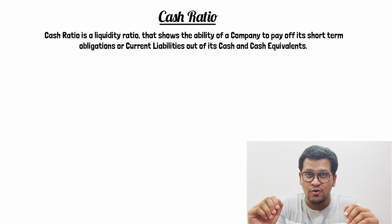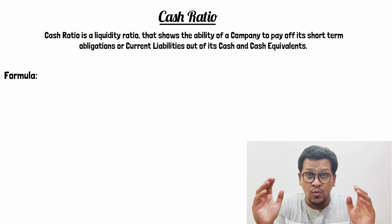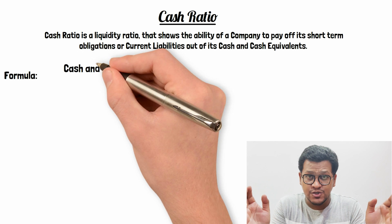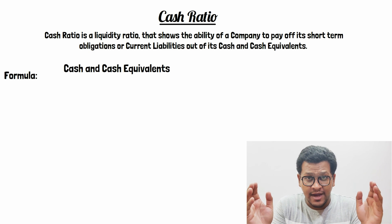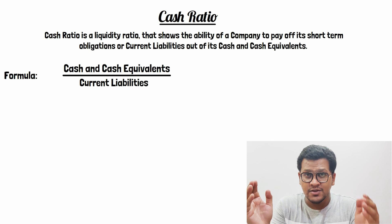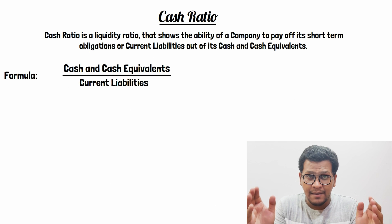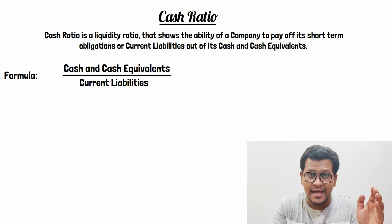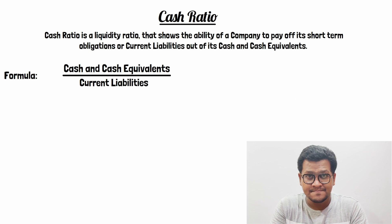Now let's have a look at the formula. We get the cash ratio by dividing cash and cash equivalents of a company by its current liabilities.